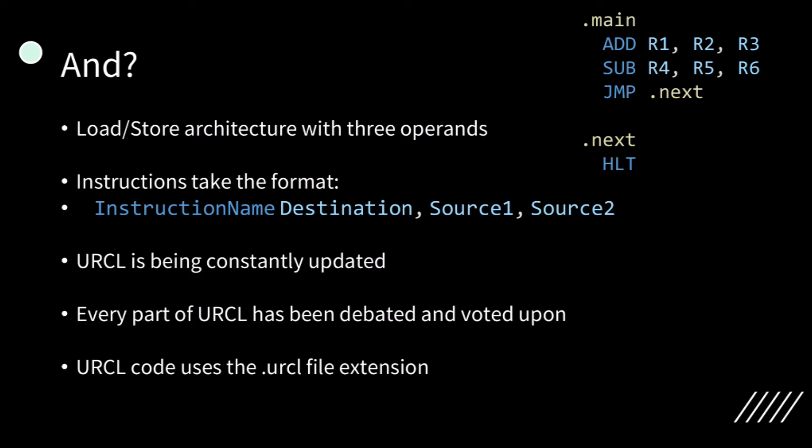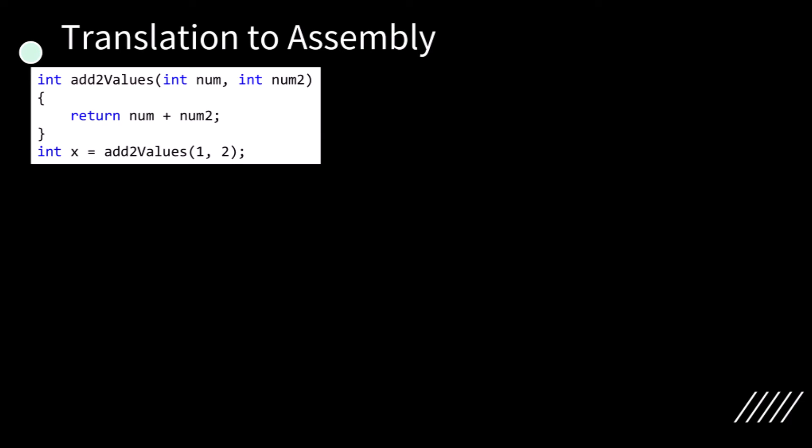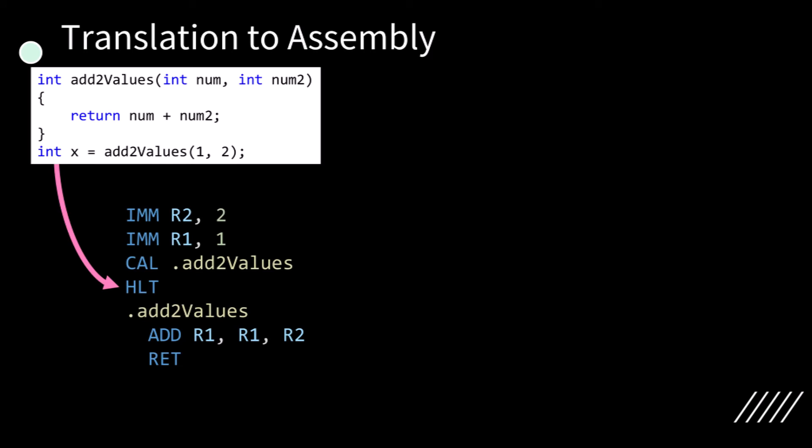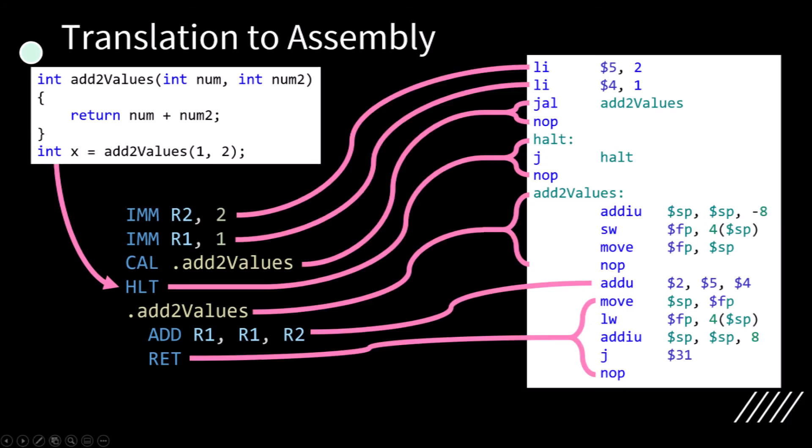URCL is being constantly updated, and every part of URCL has been debated and voted upon. URCL code typically uses the .urcl file extension. When translating from high-level code to assembly, we first start with our high-level code, then translate it into the equivalent URCL code through a compiler, then take the URCL code and translate it one instruction at a time into our target CPU's assembly. Before going further, there are two competing versions of URCL: main URCL and flagless URCL. This video is about flagless URCL, since main URCL does not have proper documentation or compiler support, but flagless URCL does.